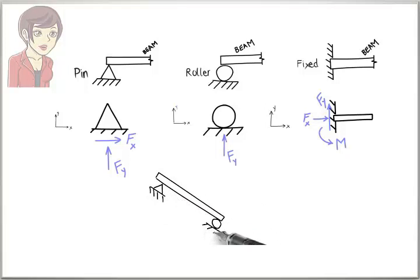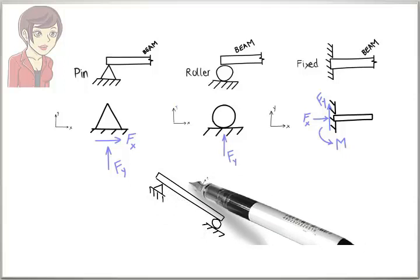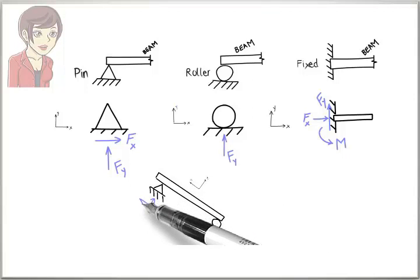Suppose our beam has a pin support and a roller support. Here, there are three reaction forces. Two forces associated with the pin support and one force associated with the roller support.